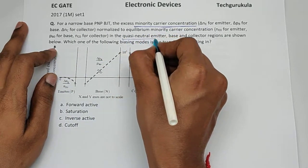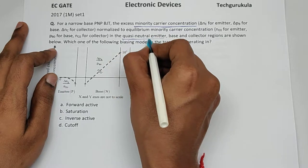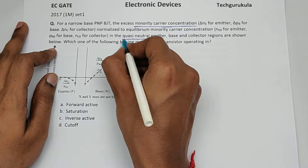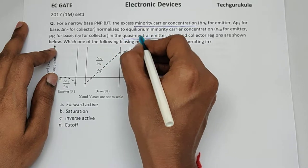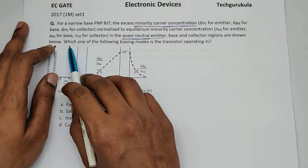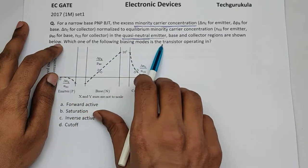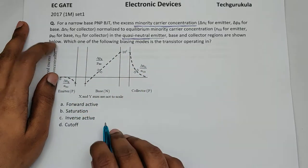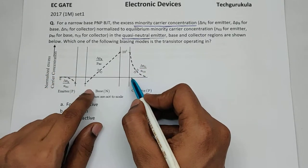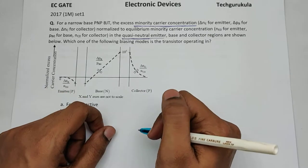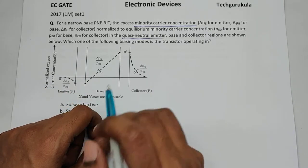quasi-neutral semiconductors briefly because it's a more detailed topic. Coming back to the question: which of the following biasing modes is the transistor operating in? If you observe carefully, the carrier concentrations will be really high when the junction is forward biased, as we